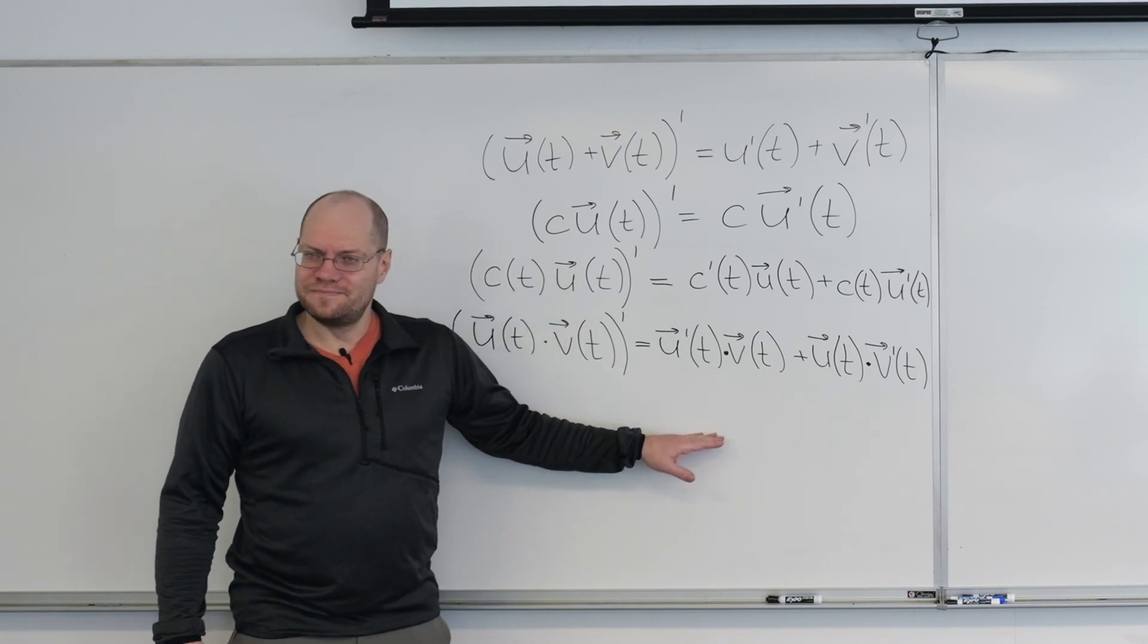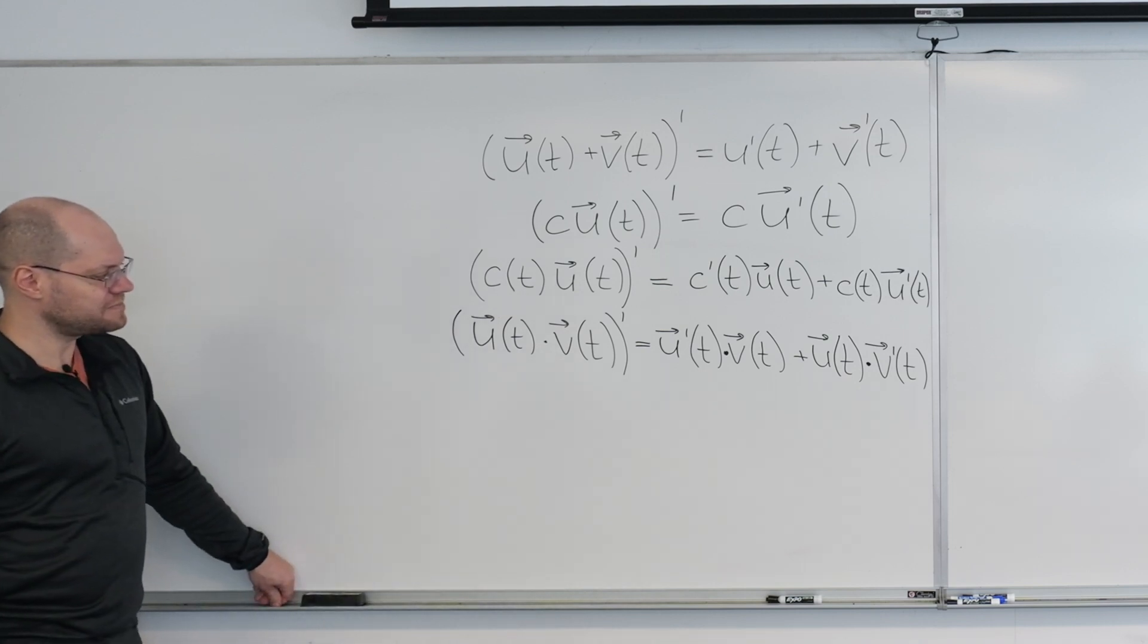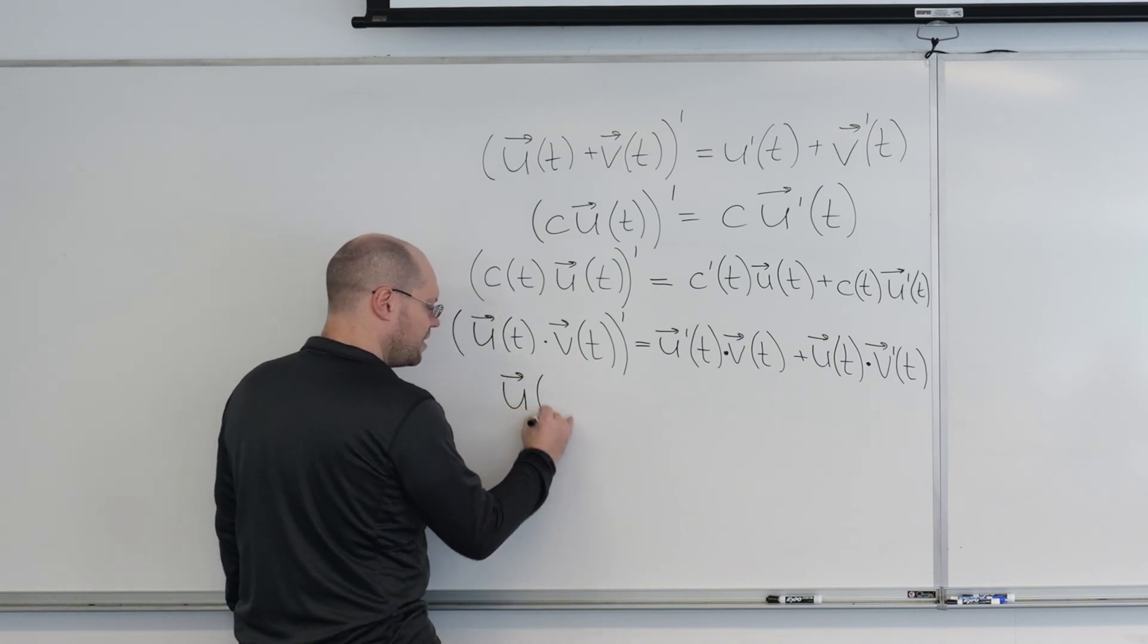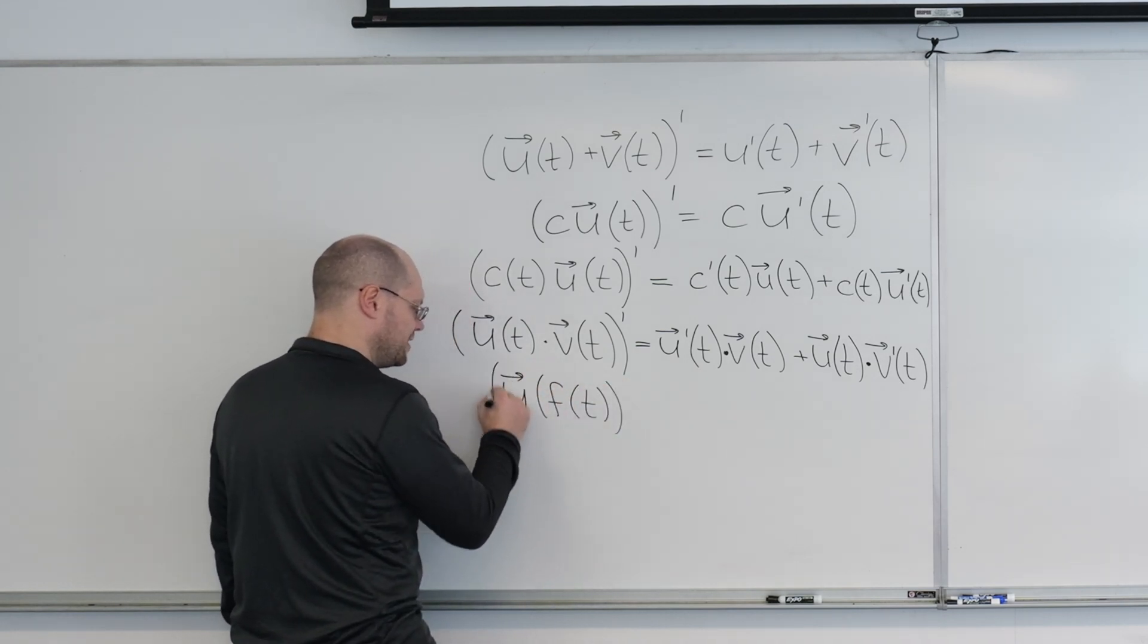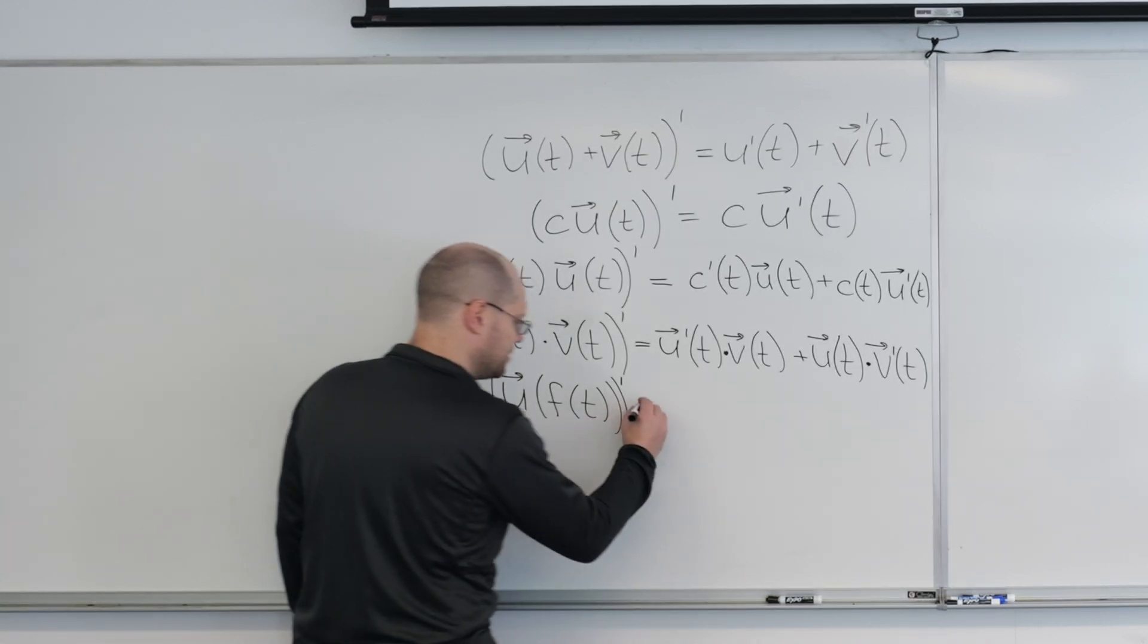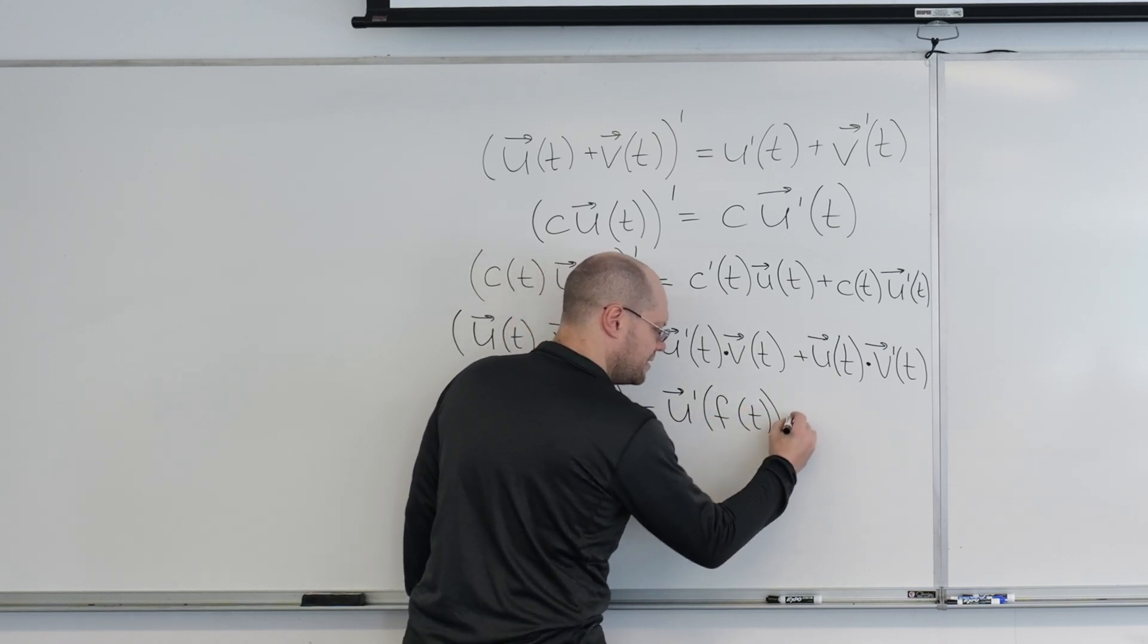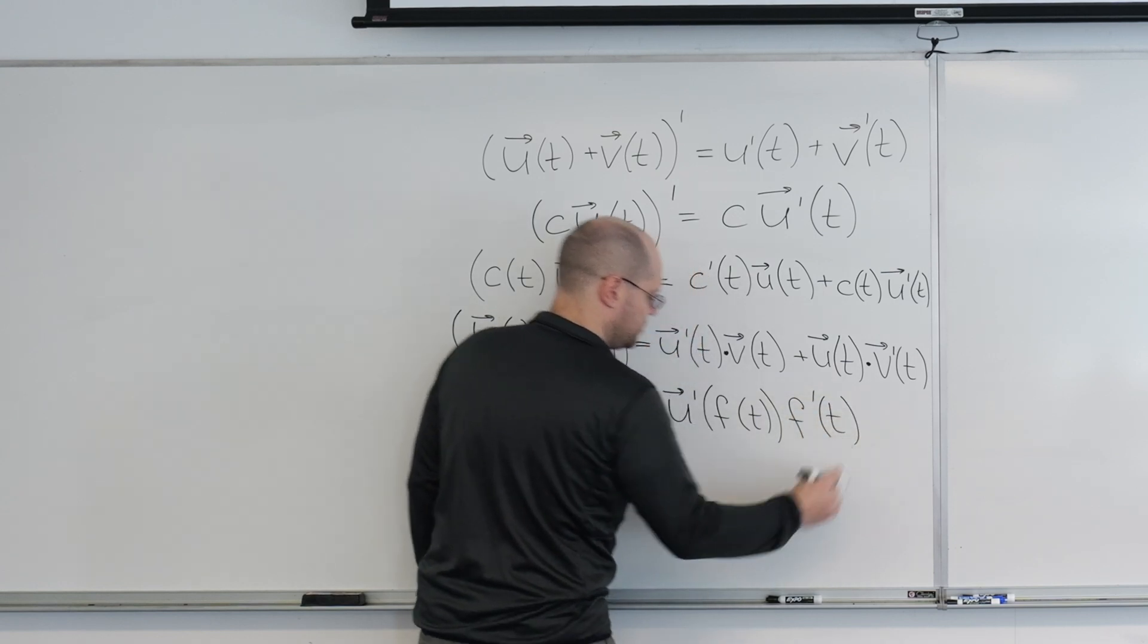And the final one that I will also prove because I can't resist doing it. And for reasons that I'll explain in a moment. So, the one remaining one is the chain rule. If you have u of f of t and you're taking the derivative of it, that's a lot of parentheses. I'm not a fan of parentheses, but what are you going to do here? That it's going to be u prime evaluated at f of t times the derivative of f of t. So, that's the chain rule.